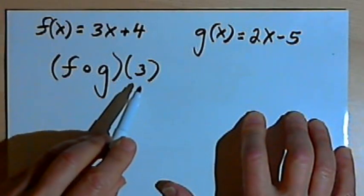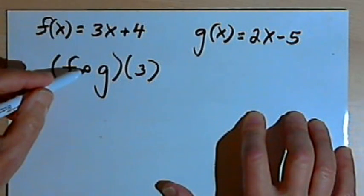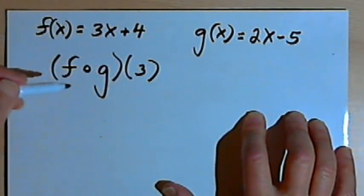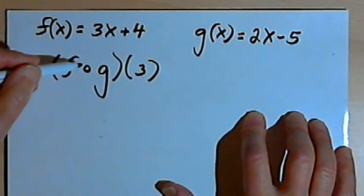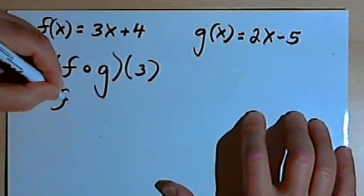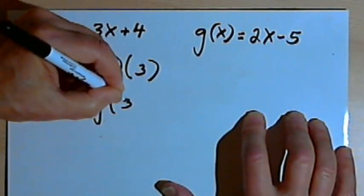This is a composition of functions. The notation is read as f compose g of 3. The easiest way to understand composition of functions is to convert this notation into a notation that looks like this: f of g of 3.